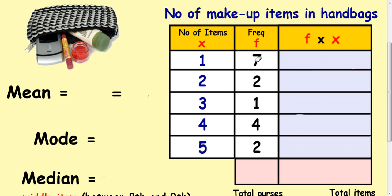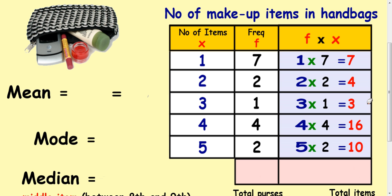So if you look at the number of items that seven people had. Seven people had one item. So in total that's seven items. And then in the next column two people had two items. So all together that's two times two which is four items. Next three. One person had three items. That's just one times three or three times one. Four people had four items. So that's sixteen items. And two people had five items in their handbag. So five times two is ten.